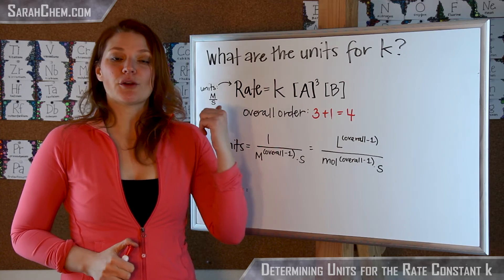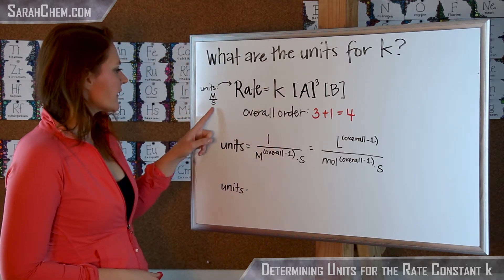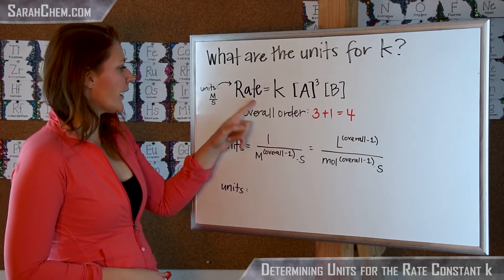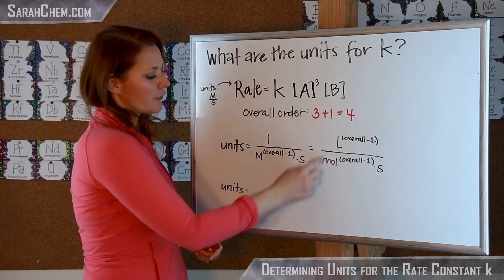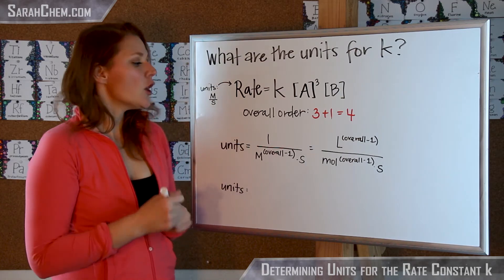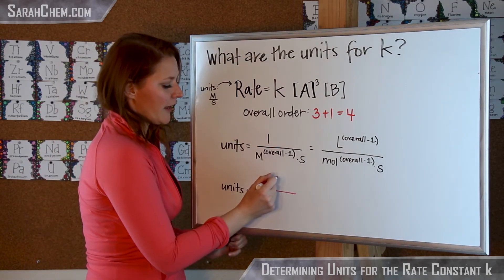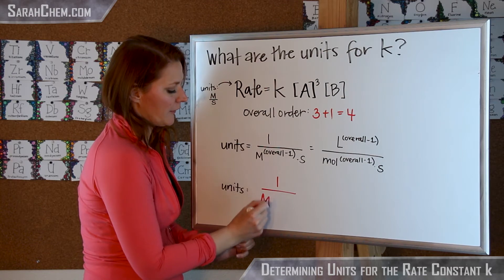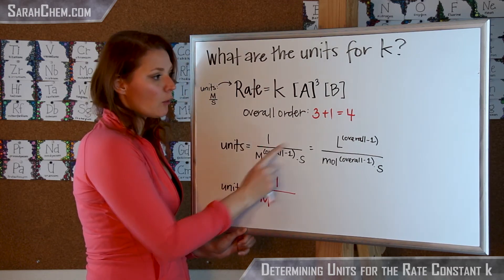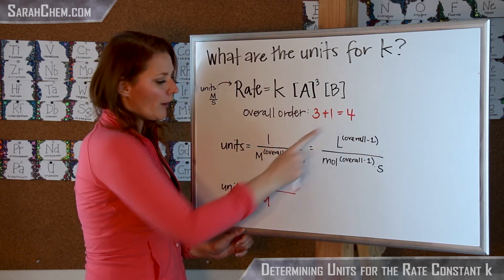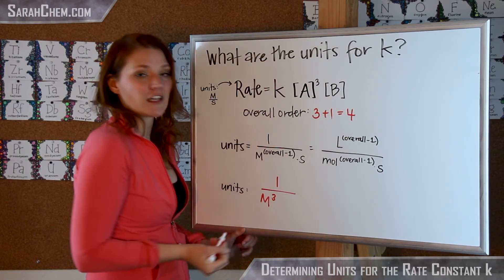So now that you know that, getting K's units are pretty easy. The other thing I want to point out is that the units for the rate that I'm giving are molarity per second, which tells you why I'm writing out liters and moles and seconds here. So what you want to do is, in this case, we have 1 over the molarity. Now the molarity's power is going to be the overall order, which we just figured out was 4 minus 1, which would mean that it would be molarity to the third.